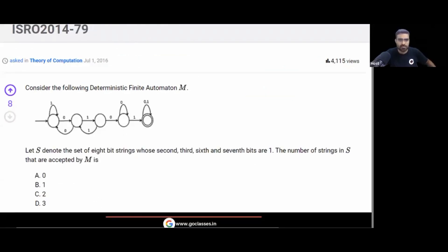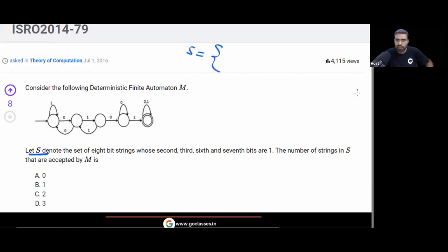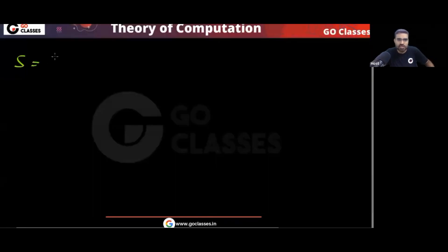What is the question asking? A DFA is given to you. Let S denote a set of strings. What is S? S is the set of 8-bit strings — strings of length 8 — whose 2nd, 3rd, 6th, and 7th bits are 1. The question says W is in S where the length of W equals 8.